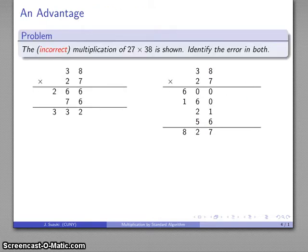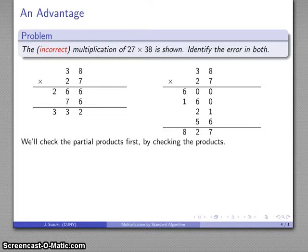Now, there's actually a couple of advantages to this form. One is that if I compare two multiplications, both done incorrectly, one by the standard algorithm and the other using partial products, it's a lot easier to identify the error in a partial product problem, which also means it's easier to check your answer. So let's take a look at my partial products problem first.